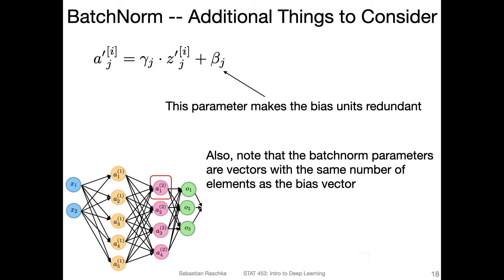One more thing to consider is that this parameter makes the bias units redundant, right? So I'm not showing the bias unit here in this network, but technically you would have a bias unit b_1 here, b_2 here, b_3 here that gets added to the net input. That is something you're familiar with.